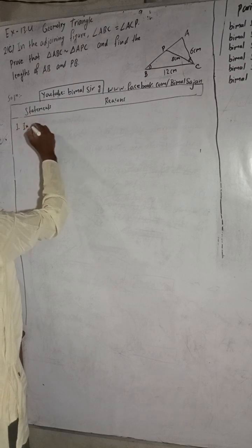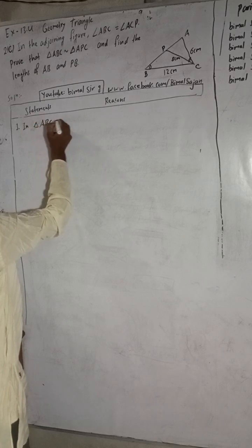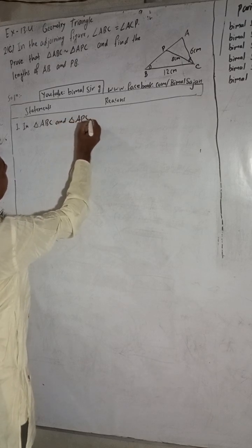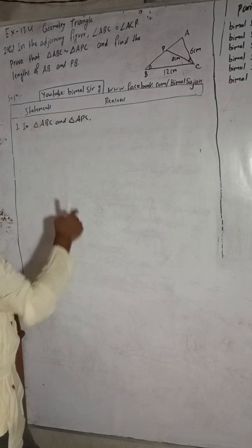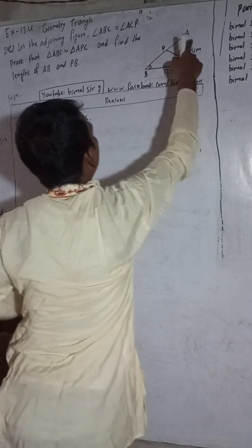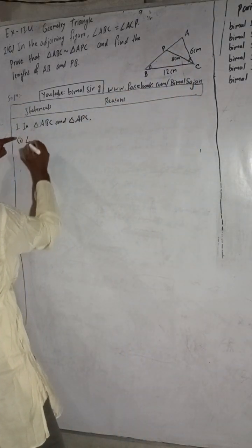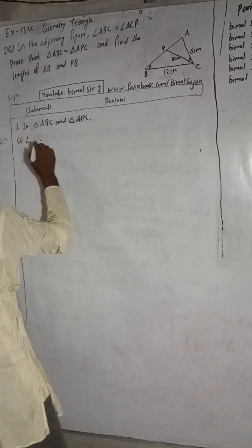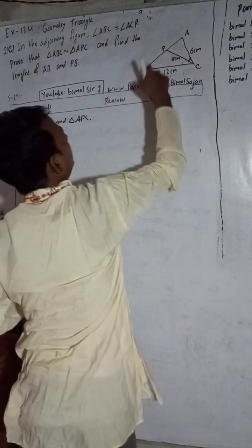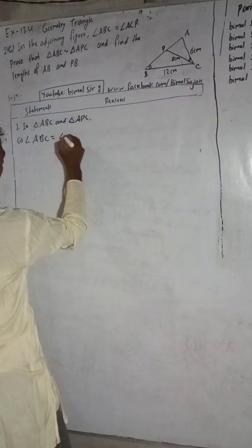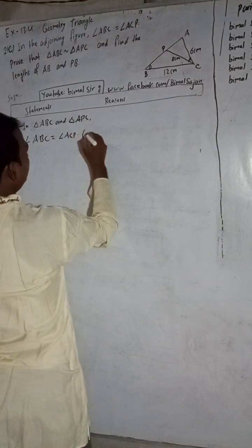In triangle ABC, this angle — angle ABC — is equal to, in the smaller triangle, this angle ACT. Angle ACT is equal to angle ABC. This angle is given here.